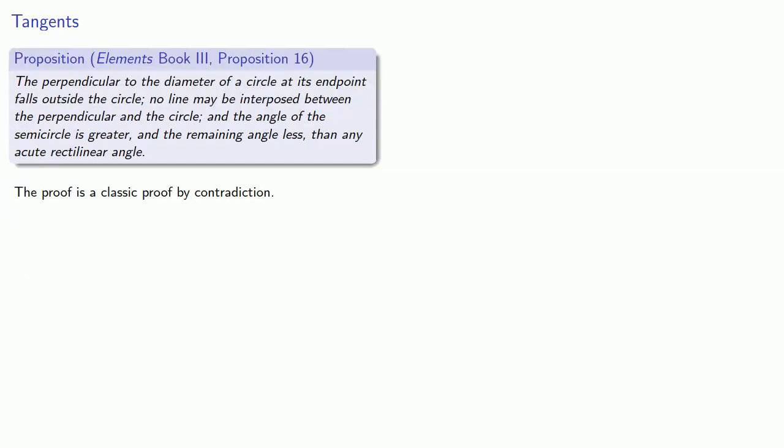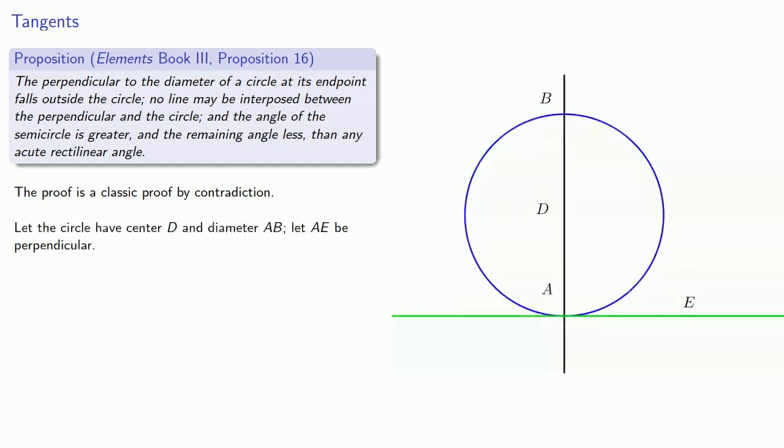The proof is a classic proof by contradiction. Let the circle have center D and diameter AB, and let AE be perpendicular. Now, if this line doesn't fall entirely outside, it has to cross the circle at some other point C.